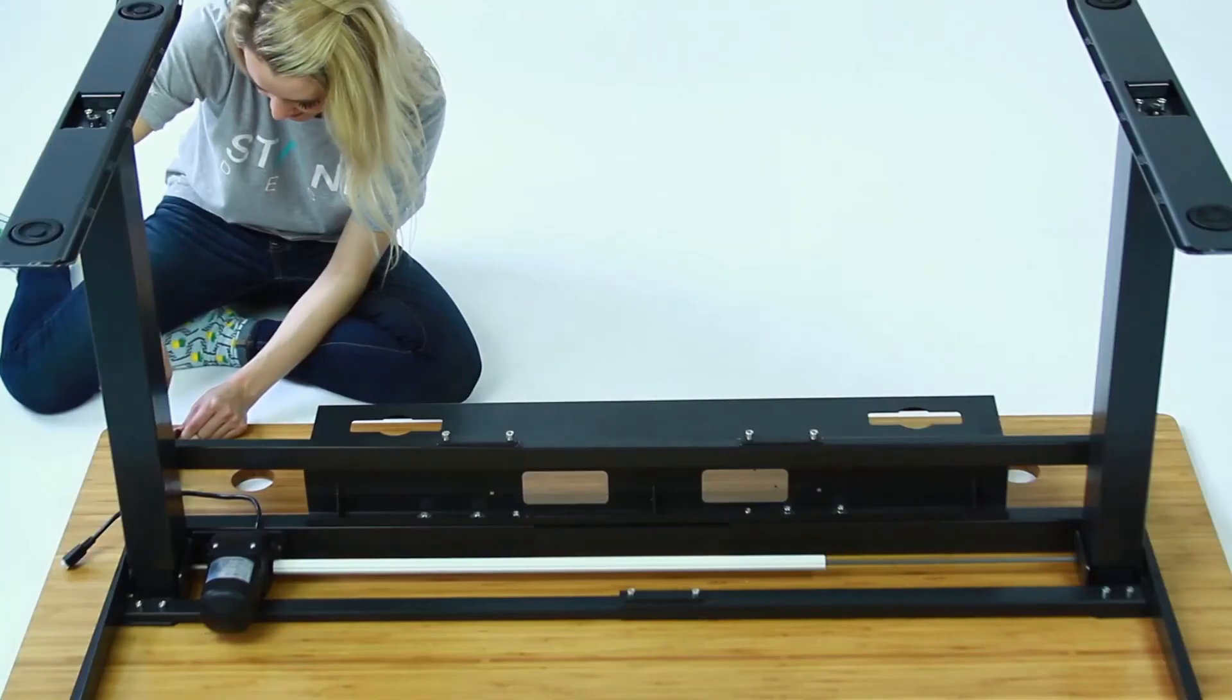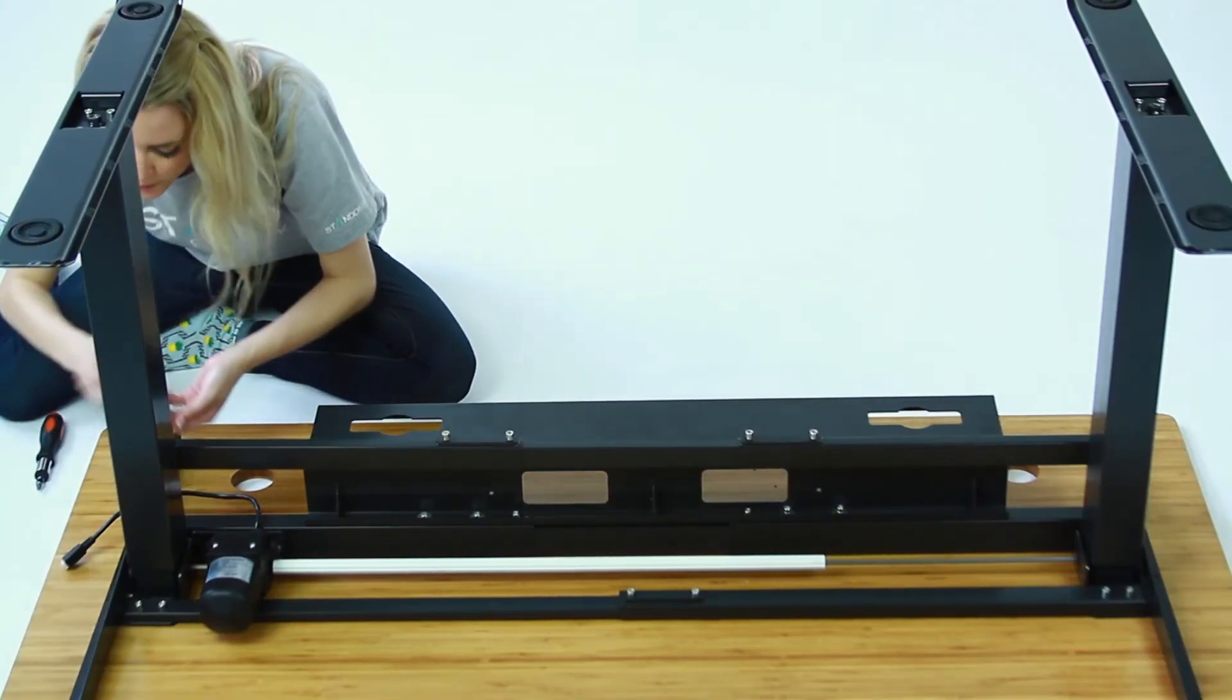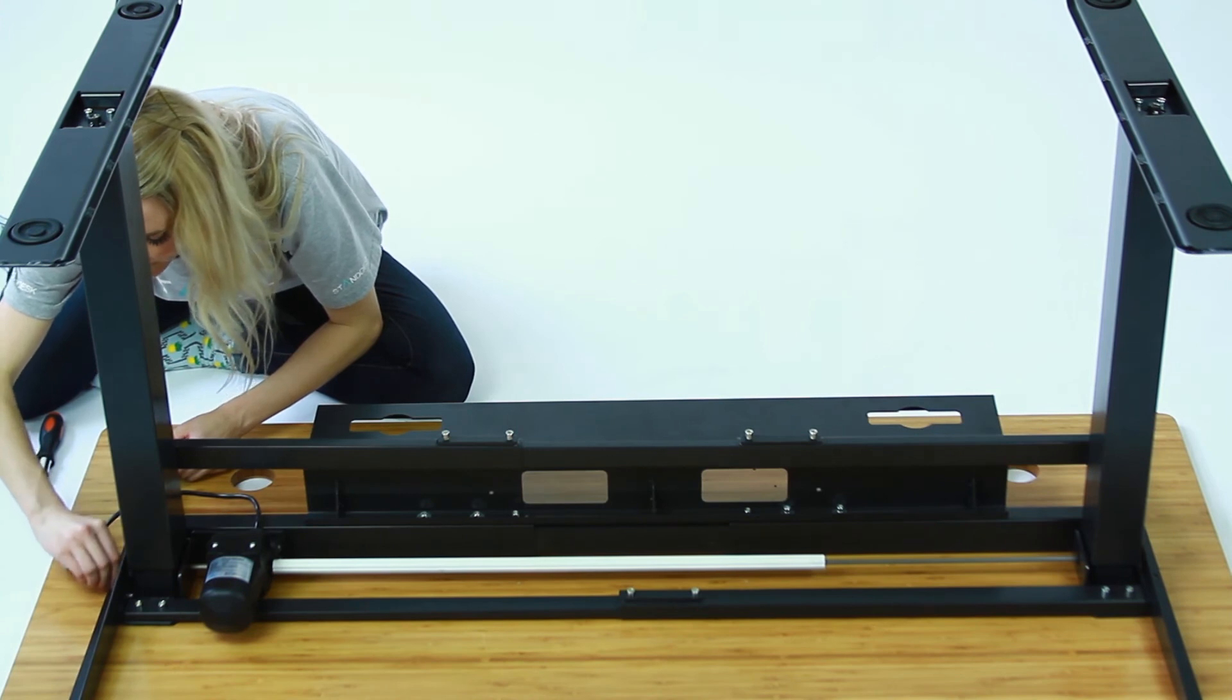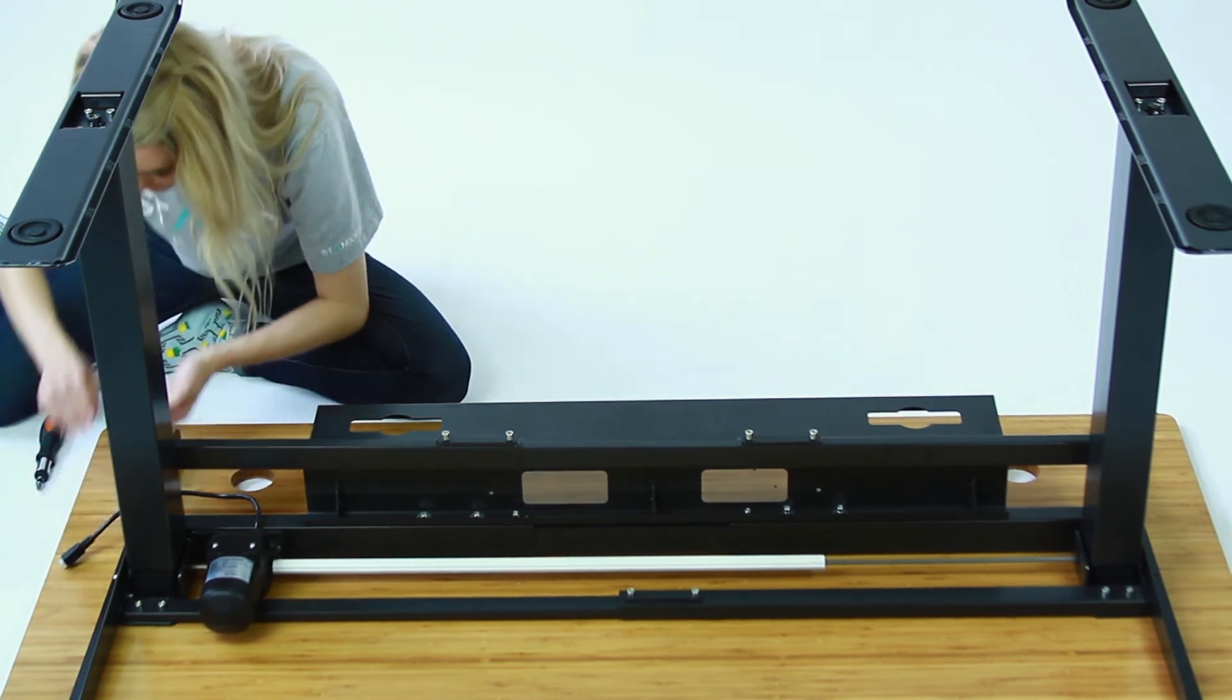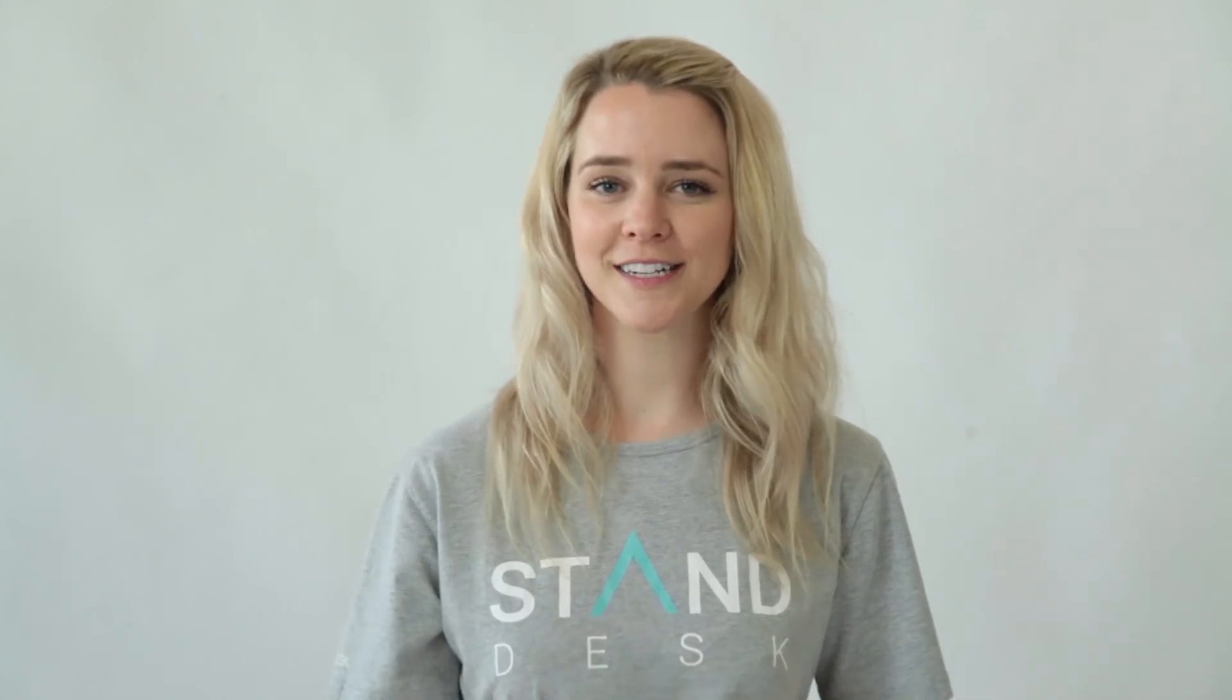Now we're going to attach the frame to the top. Use the ST 4.8 by 19 screws for this. If your top does not have pre-drilled holes you can use a drill or a power tool to attach your top. We'll show you how to do this in a separate video. Now use two of those same screws to attach the control box to the middle of the top.